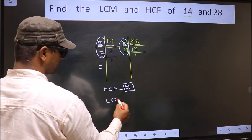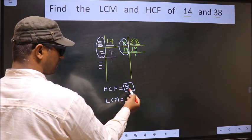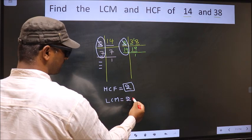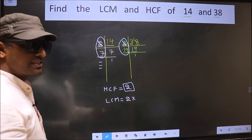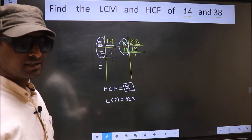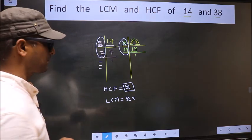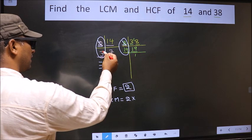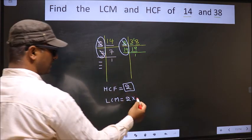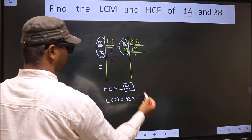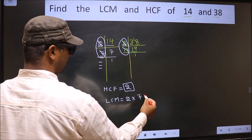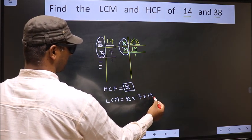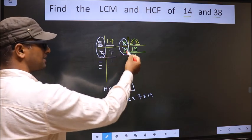Now LCM is whatever number you got as HCF, to that we should multiply by the numbers which we did not cut. Here we did not cut 7, so you cut 7 and write here. Here we did not cut 19, so you cut 19 and write here. Now each number has been cut.